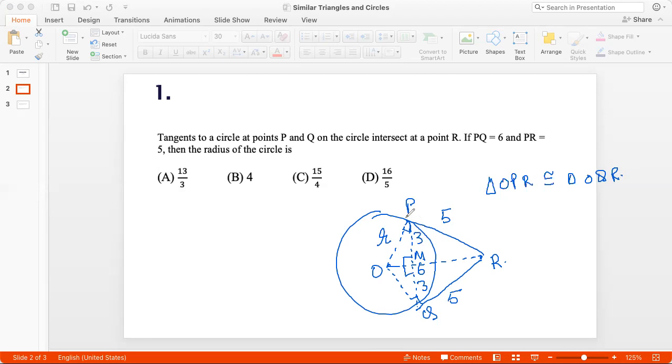And if we apply Pythagoras theorem to PMR, then MR, this distance will be 4. Now we can apply similar triangles. Let me show you which two triangles I'm looking at. I'm looking at triangle OPR, that's triangle 1, and I'm looking at triangle PMR, that's my second triangle. These two are similar triangles.